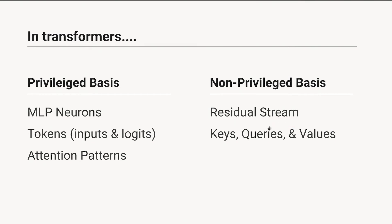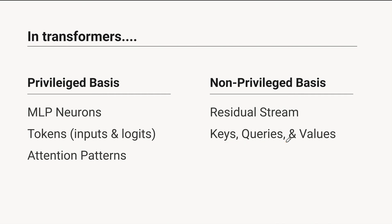Another place where you don't have a privileged basis is your keys, queries, and value vectors. Your attention head produces these by doing a matrix multiply of your residual stream, then you dot product the keys and queries together — there's nothing about that which is basis dependent. And your values are just a linear combination multiplied by another matrix, so there's nothing about the value vectors that's going to encourage them to have a special basis.